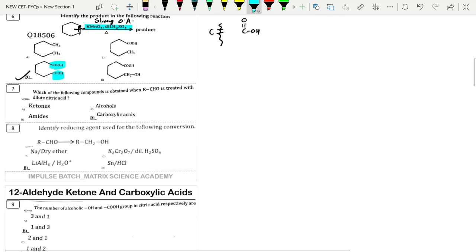Which of the following compound is obtained when RCHO is treated with dilute nitric acid, an oxidizing agent? Aldehyde with oxidizing agent, the product is carboxylic acid. Remember this: aldehyde will form alcohol upon reduction, and aldehyde oxidation gives carboxylic acid.